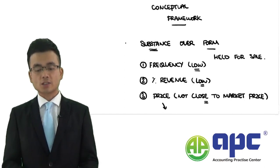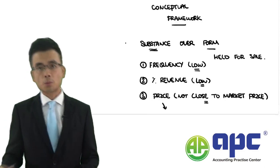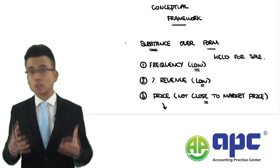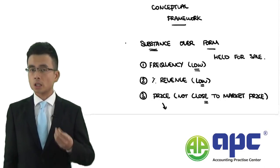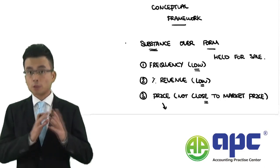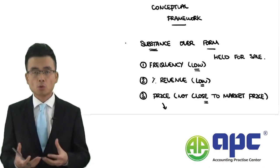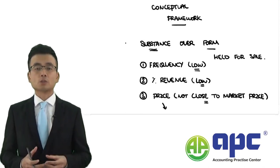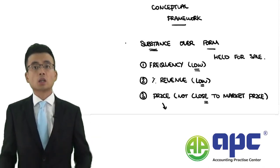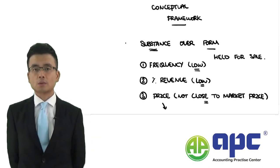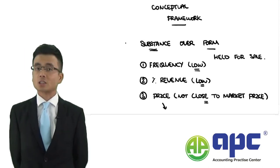We also have other conceptual framework requirements when we look at later questions. For example, there is the prudence concept, because inventories may be impaired. And there is the accruals concept — for inventories that cannot be sold, we should remove those unsold inventories from the cost of sales according to the matching principle. We will look at these when we come to the case studies later on.